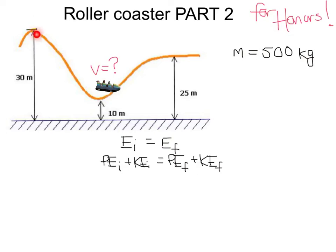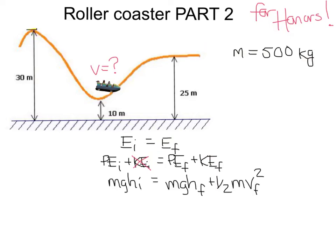At the top of the hill, it has potential energy because it's at a height of 30 meters, but it's not moving, so it has no kinetic energy at the top. When it reaches the bottom of the hill, it has potential energy because it's still at a height of 10 meters, and now it's moving, so it also has kinetic energy. So mg times the initial height of 30 meters equals mg times the final height of 10 meters plus one-half mass times velocity squared. This velocity is what we're looking for. Take a moment to calculate the potential energies and fill in the equation.